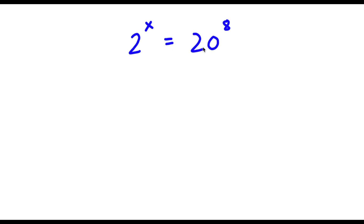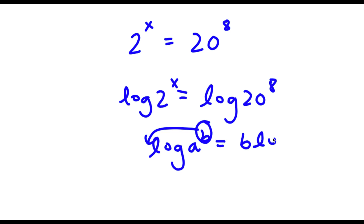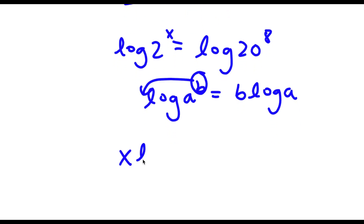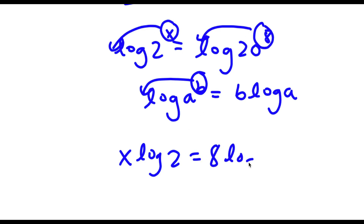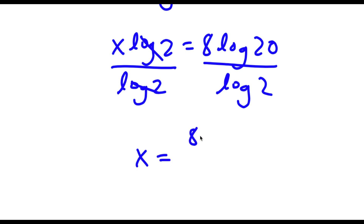Alright, so I have 2 to the power of x is equal to 20 to the power of 8. The first thing I'm going to do is take the log on both sides. So I have log of 2 to the power of x equals log of 20 to the power of 8. Using the log power rule — log a to the power of b equals b times log a — I move the exponents to the front: x times log 2 equals 8 times log 20. Then I divide both sides by log 2, giving x equals 8 log 20 over log 2.